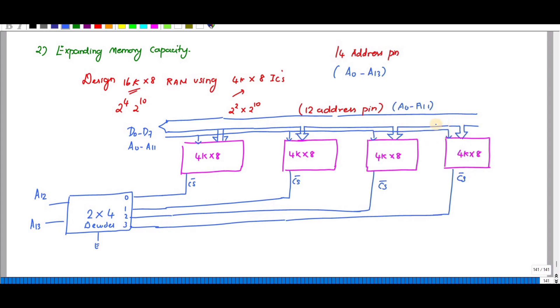You have read and write pins. This is active low pin and this is also active low. CS represents chip select. This is how we have to connect the circuit memory.